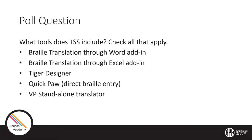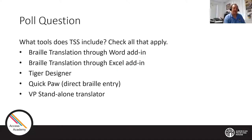Poll results for 'What tools does TSS include?': 90% said it includes Tiger Designer. 85% said Braille translation through Word add-in. 69% said QuickPaw or direct Braille entry. 67% said Braille translation through Excel add-in. And 49% said VP standalone translator. The answer is all of the above — all five tools. The three main ones, plus the two new ones starting with TSS 7.